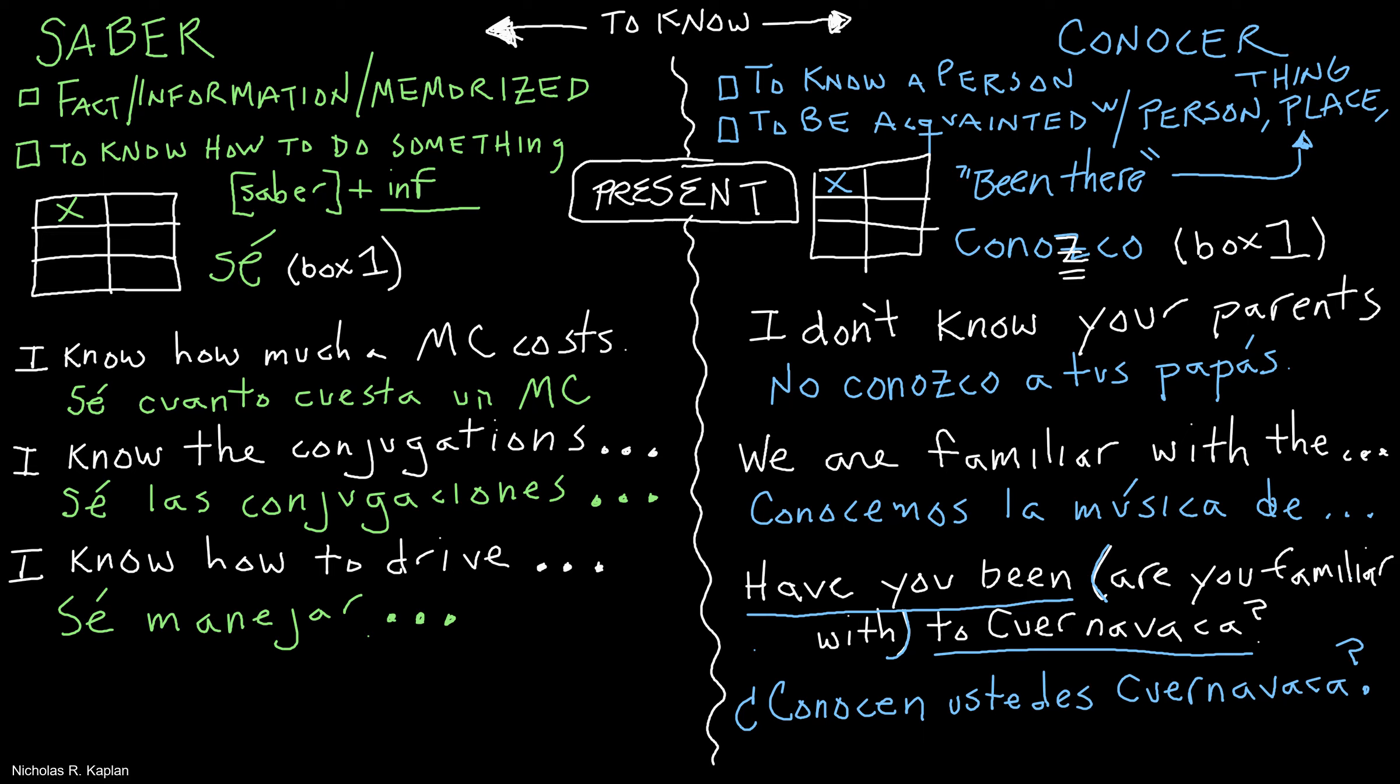So, saber and conocer. You can translate them both as I know, you know, he knows. But it's more important to think about the context of what kind of knowing you're referring to, and to substitute other words in English. Are you talking about knowing a fact, information, something memorized, or how to do something? That's saber.